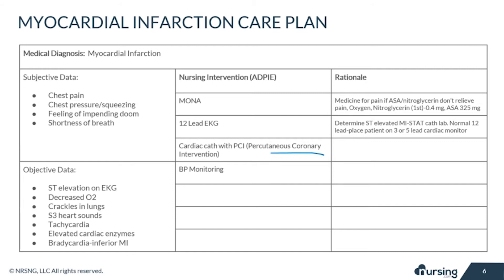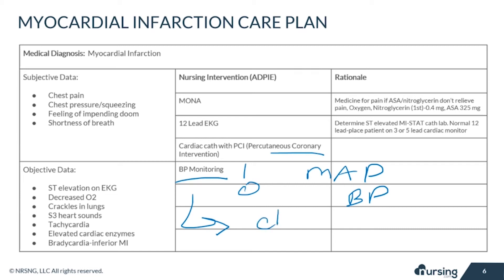Patients must have their BP monitored closely, with values and limits determined by the provider. It is measured by MAP — mean arterial pressure — or systolic BP with an arterial line. The higher the blood pressure, the more pressure on a blood clot, and it isn't uncommon for a patient to have more than one clot, which could break free with high blood pressure.